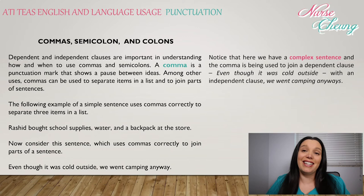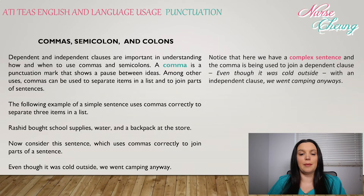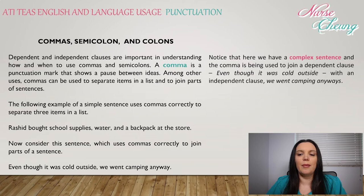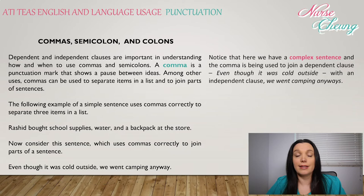Dependent and independent clauses are important in understanding how and when to use commas and semicolons. A comma is a punctuation mark that shows a pause between ideas. Among other uses, commas can be used to separate items in a list and to join parts of a sentence. For example: 'Rashad bought school supplies, water, and a backpack at the store.' Also: 'Even though it was cold outside, we went camping anyway.' Here the comma joins a dependent clause with an independent clause.